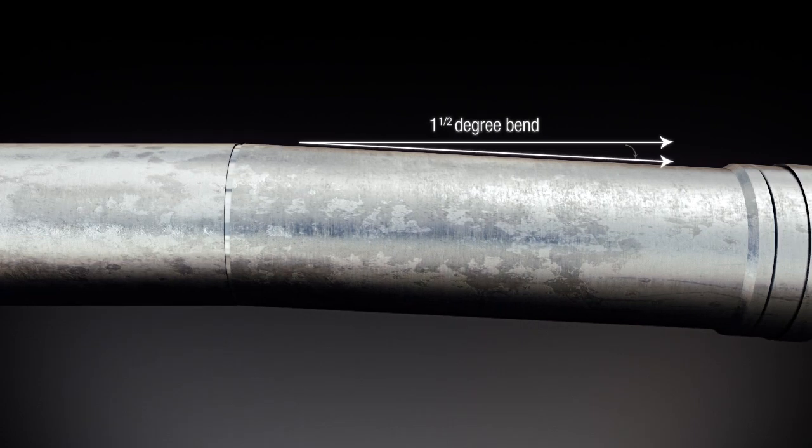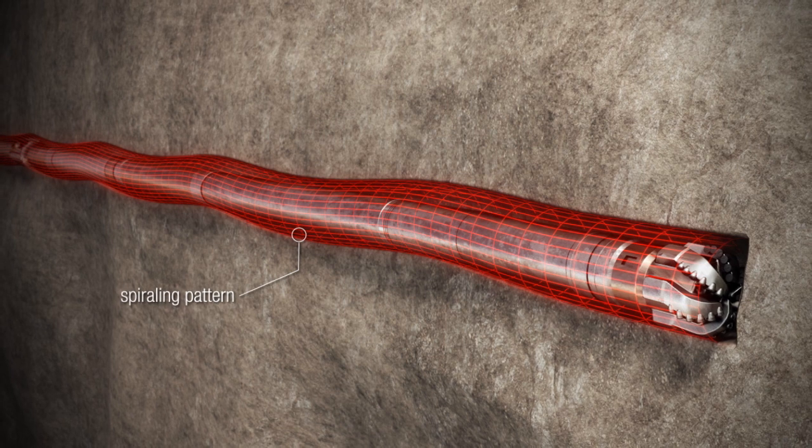Because a directional drill bit sits at an angle from the rest of the drill string, a spiraling pattern emerges while the string rotates.